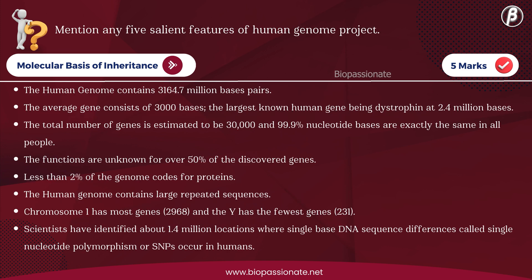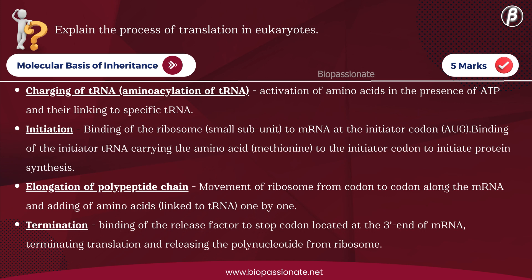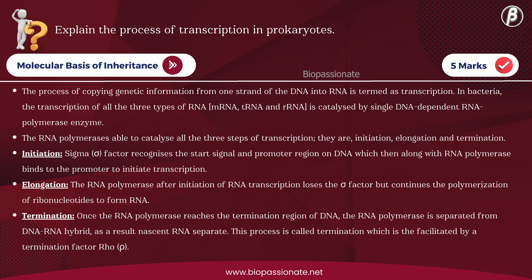Mention any five salient features of the Human Genome Project — for five marks. Explain the process of translation in eukaryotes — for five marks.